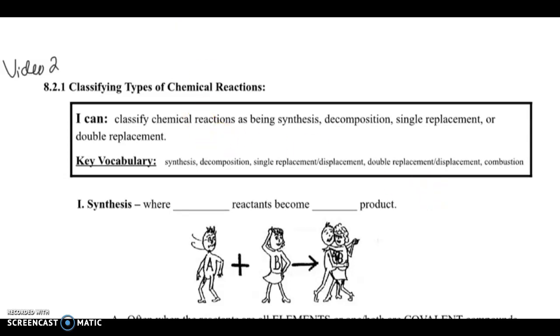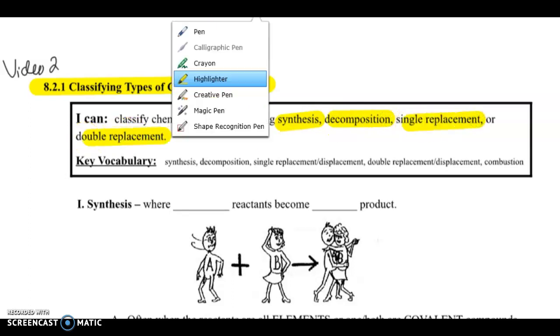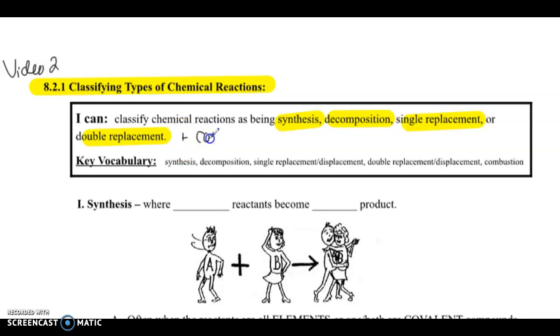So now we're going to start learning about the types of different chemical reactions. There's five main types that we're going to learn about: synthesis, decomposition, single replacement, double replacement, and then we're also going to add on one more, combustion.